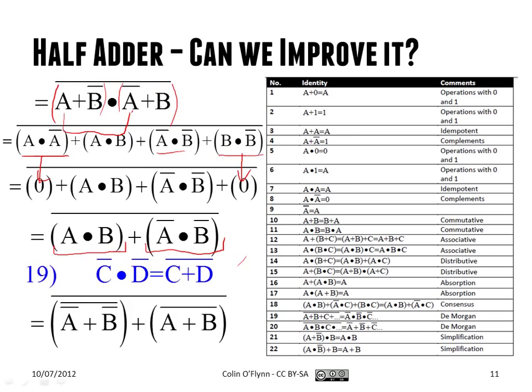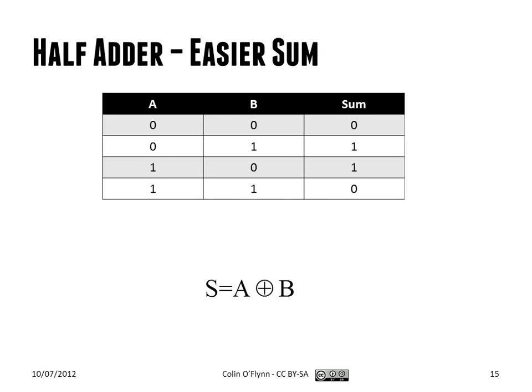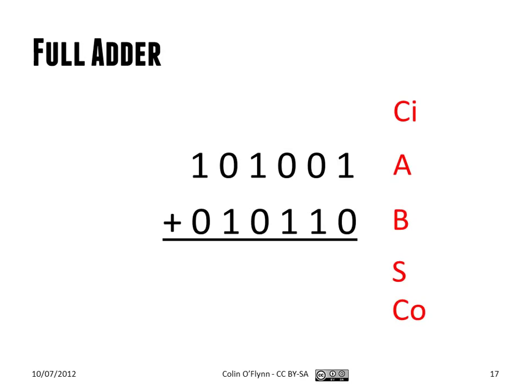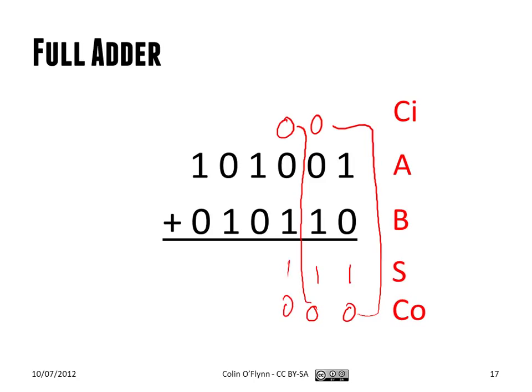The half adder itself has a problem: when we're doing this math, for the first column it works because we have A and B and a SUM — SUM is 1, carry is 0. But then the carry is moved up, giving us a carry input, so we need three inputs: carry input, A, and B in, and we still create SUM output and carry out. This keeps going, so it should be obvious that if we want to add binary numbers, it's insufficient to just have a half adder — we need more.